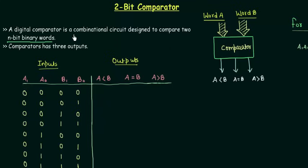A digital comparator is a combinational circuit designed to compare two n-bit binary words. That's why this is shown as thick arrows showing that it is more than a single bit. In this particular case we are going to compare two-bit words.